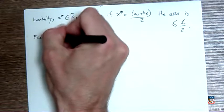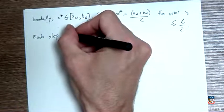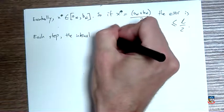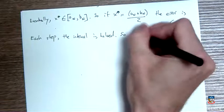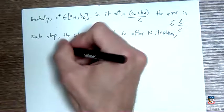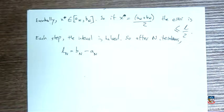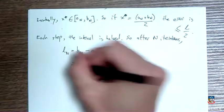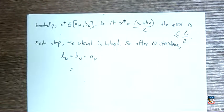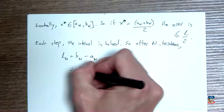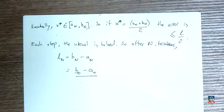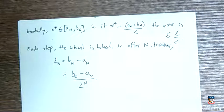I also know that each step, each iteration, the bracketing interval gets halved. So after n iterations, I have the length of the interval lₙ—that's going to be bₙ take away aₙ. That's the two endpoints of the interval. And what is that? Well, it halves each time. If I've done n iterations and my interval, the width of my interval exactly halves each time, then I get 2 to the power of n divisions of the interval each time.